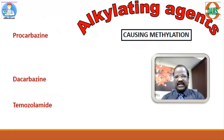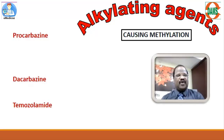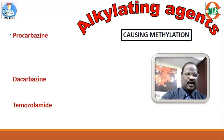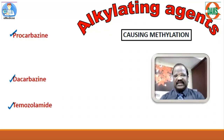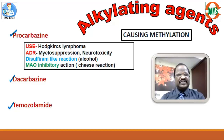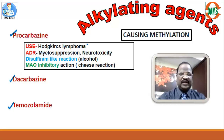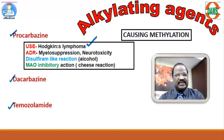Now we move to alkylating agents causing methylation reactions. Examples are procarbazine, dacarbazine, and temozolomide. Procarbazine is an important drug useful for treatment of Hodgkin's lymphoma, and its adverse effects include myelosuppression and neurotoxicity.